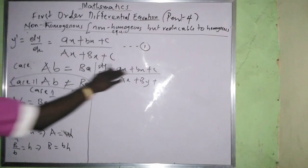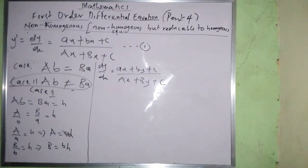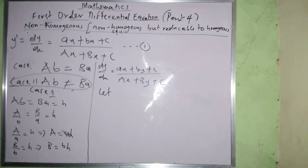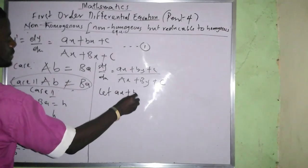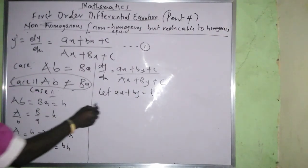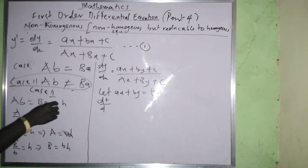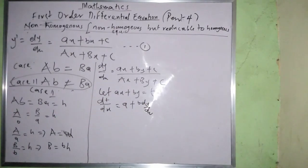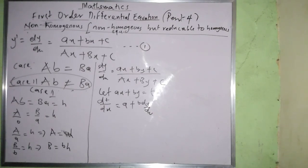For case two, since the ratios are equal, we let t = ax + by. Then dt/dx equals a + b(dy/dx). Rearranging gives dy/dx in terms of t, which allows us to reduce everything to a separable equation in t and x.